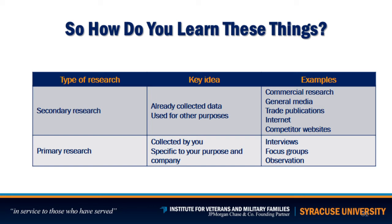There are two types of research: secondary research and primary research. Secondary research is already-collected data used for other purposes as well. Examples include commercial research, general media, trade publications, internet searches, and competitors' websites. Primary research is information collected by you, for you, specifically for your purpose and company. This can be done through interviews, focus groups, observations, and surveys. You have to do both. The secondary research gives you a broad perspective; primary research digs deeper to find out who your customers are, how they buy, whether they're willing and able to buy.